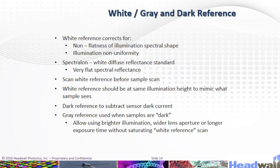White, gray, and dark reference: The white reference corrects for non-flatness of the illumination spectral shape and illumination non-uniformity. Scan the white diffuse reflectance standard — which has very flat spectral reflectance — before the sample scan. The white reference should be at the same illumination height to mimic what the sample sees. Use the dark reference to subtract sensor dark current. A gray reference is used when samples are dark, allowing the use of brighter illumination or a wider lens aperture or longer exposure time without saturating the white reference scan.